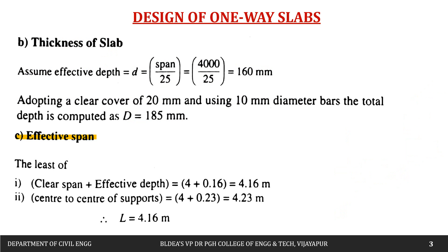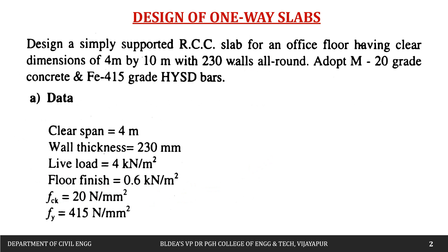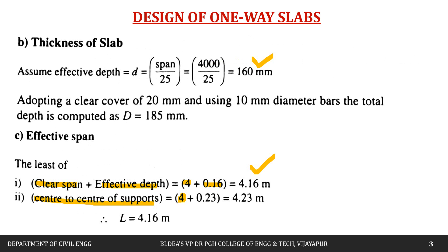The effective span is the lesser of: clear span plus effective depth = 4000 + 160 = 4160 mm = 4.16 m, or center-to-center of supports = 4000 + 230 = 4230 mm = 4.23 m. The lesser value is 4.16 m, so effective span = 4.16 m.